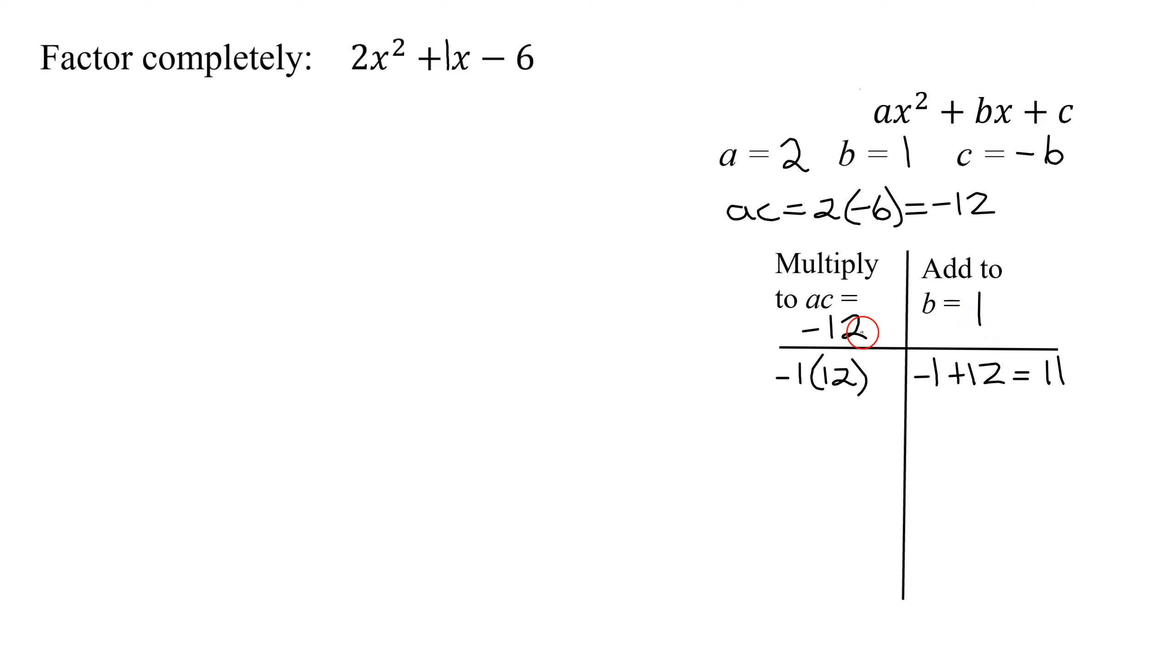So I'm going to put it on pause for a second to work out some of the other factors. So I tried negative 2 and 6. That didn't work. But then negative 3 times 4 is negative 12, and negative 3 plus 4 is positive 1. And that's the number I'm looking for.